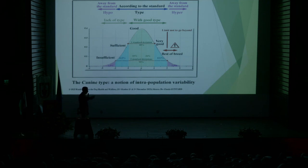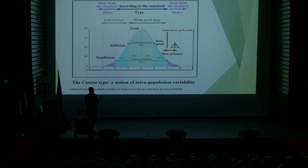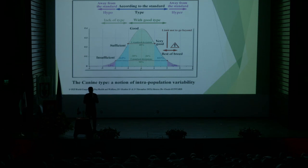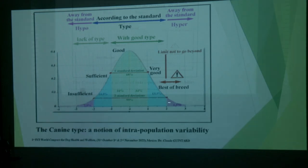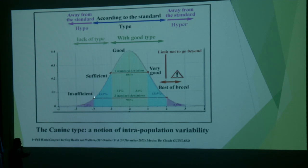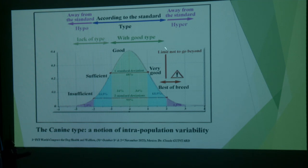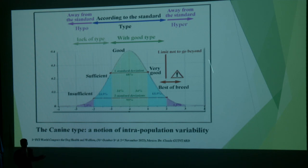Now if we consider the same graphics for the French Bulldog, the craniofacial ratio is about 0.2 to 0.15. This here corresponds to about 0.2, and the animals here are around 0.1 — these have short muzzles. And here the animals are around 0.3, and they are in a lack of type with muzzles which are longer. We see straight away that with these two breeds the limit is not the same: it was 0.3 for the Dogue de Bordeaux and it's now 0.1 for the French Bulldog.